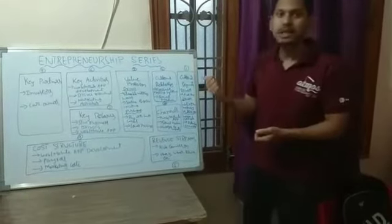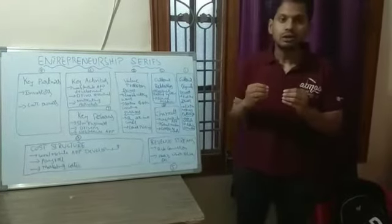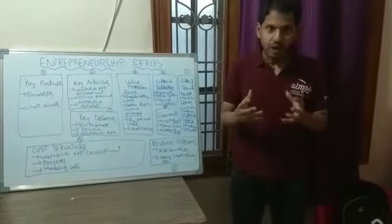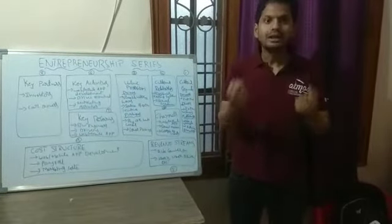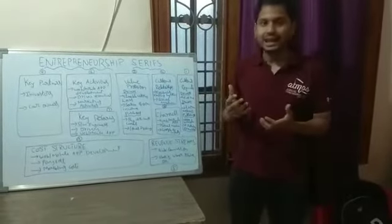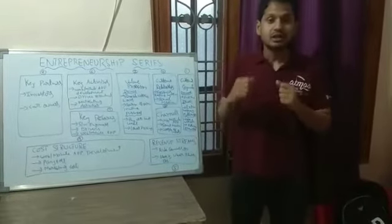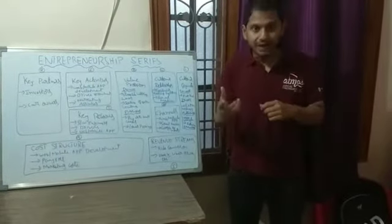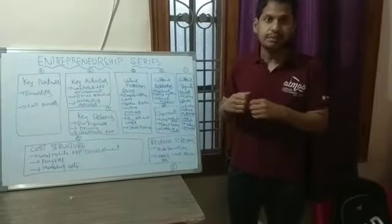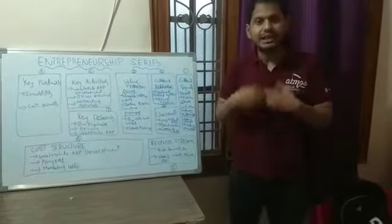The first parameter in the business canvas model is customer segments. The name itself is telling you have a product or a service — who are the customers who are using your product or service? Let me take an example of Uber or Ola. These are the two online platforms for car booking. I have taken an example of Uber throughout this business canvas model.